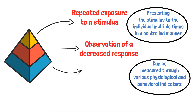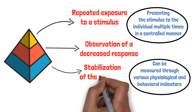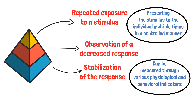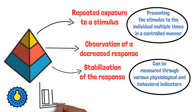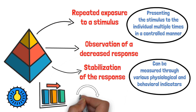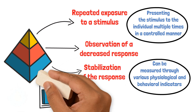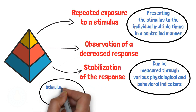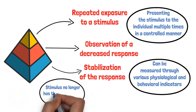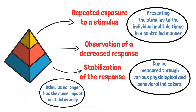The third step is the stabilization of the response. After a certain number of exposures, the individual's response to the stimulus reaches a stable, lower level, indicating that habituation has occurred. This stable response shows that the stimulus no longer has the same impact as it did initially.